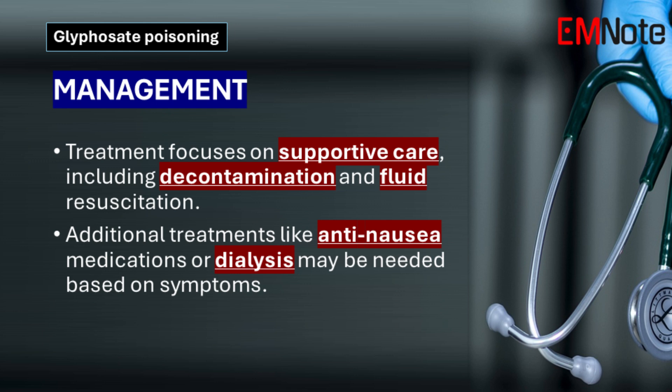Treatment for glyphosate poisoning focuses on supportive care. Initial steps involve decontamination, airway management, and fluid resuscitation. Specific treatments like anti-nausea medications, sodium bicarbonate, or dialysis may be necessary depending on the symptoms.